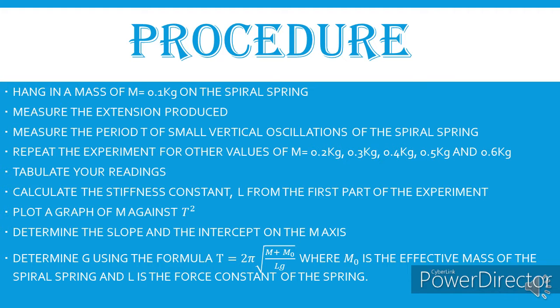At the end of that, I will tabulate my readings. Once I tabulate my readings, I'm now going to calculate the stiffness constant from my graph, and then I'll plot a graph of m against T². From the graph, I'm going to deduce the slope and the intercept, especially the intercept on the m axis.